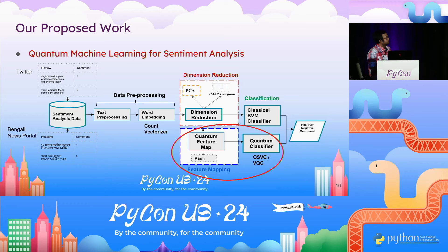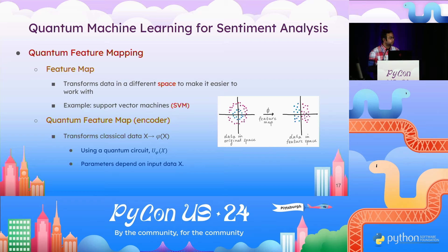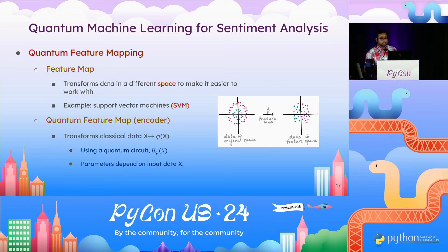Back to our framework — the quantum methods. After dimension reduction, the data goes through a quantum feature map and then the quantum classifier. A feature map transforms data to a higher-dimensional space to make classification easier, as in a support vector machine. The quantum feature map encodes classical data into the quantum domain — the Hilbert space — so it can be used for classification. To encode classical data onto the quantum domain, we use a parameterized quantum circuit where the parameters depend on the input data.